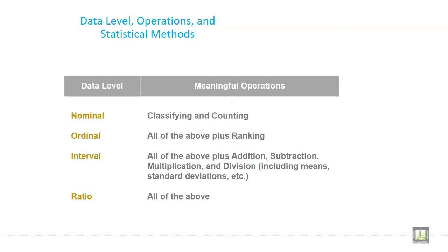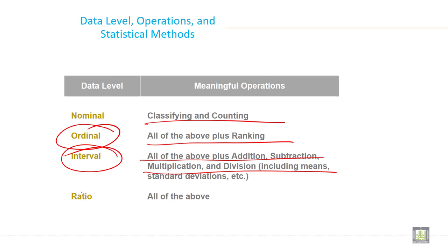Nominal: classify and count. Ordinal: all the above plus ranking. Interval: all the above plus addition, subtraction, multiplication, and division. Ratio: all of the above.